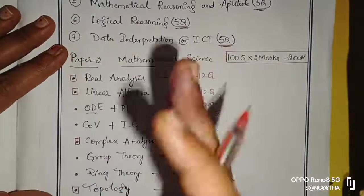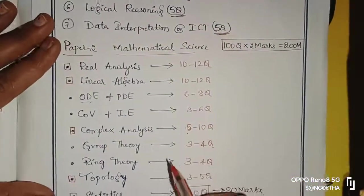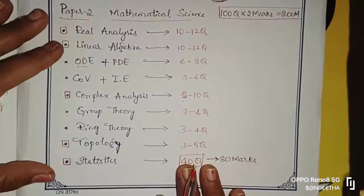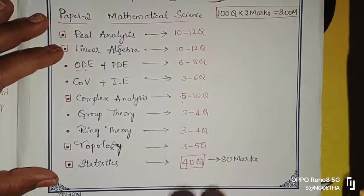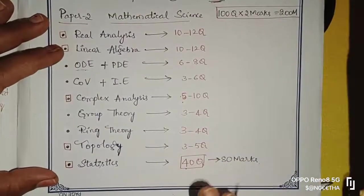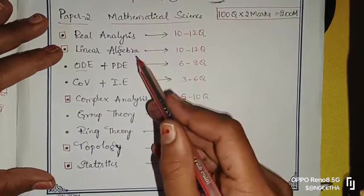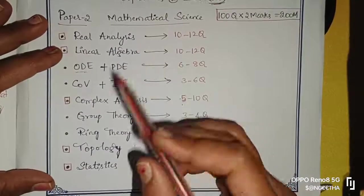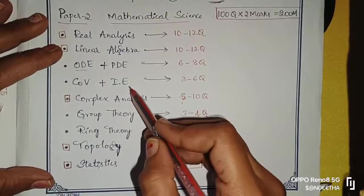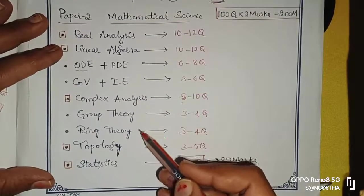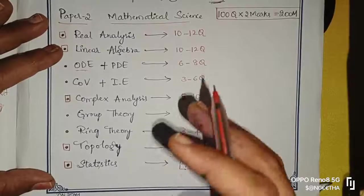Very important - 150 marks. All the time you have to target 100 marks, thinking about 50 questions. Coming to mathematics science subjects: real analysis, linear algebra, ODE, PDE, calculus of variation, integral equations, complex analysis, group theory, ring theory, topology, statistics.